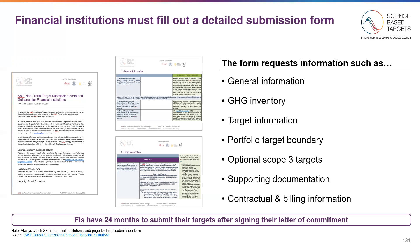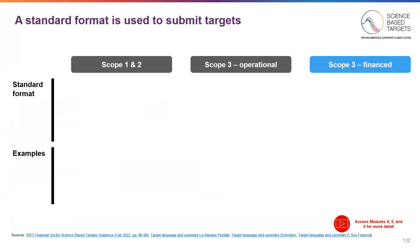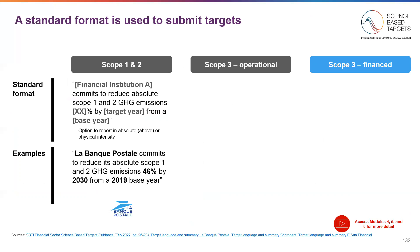FIs have 24 months to submit their targets after signing their commitment letter. A standard format is used to submit and communicate all targets to enable corporations and stakeholders to easily compare across entities. Utilizing targets already set by financial institutions, we've provided an example for each of the buckets here. For Scope 1 and 2, there's a combined percent reduction of Scope 1 and 2 for that target year from a base year. Financial institutions can pick absolute or physical intensity targets.